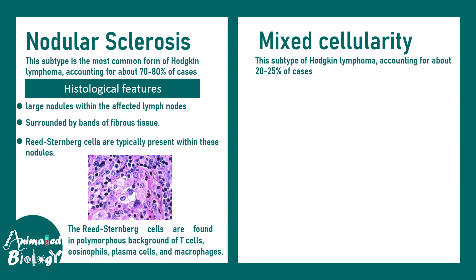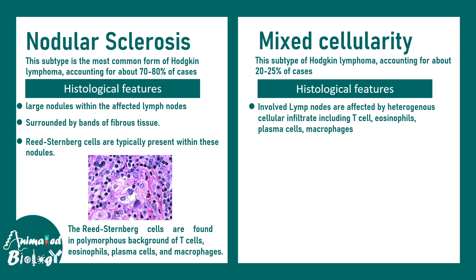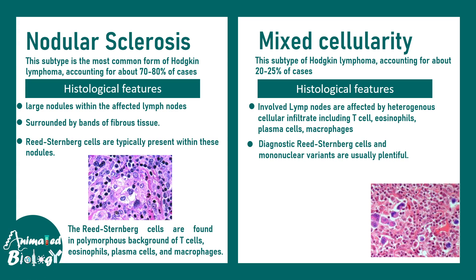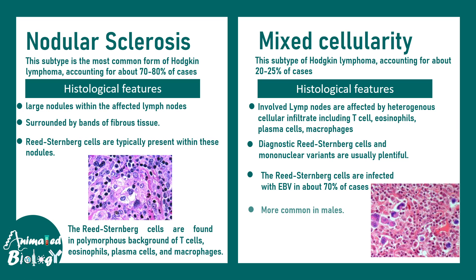Mixed cellularity is a bit rarer, constituting about 20 to 25 percent of cases. The involved lymph nodes are affected by a heterogeneous cellular infiltrate including T cells, eosinophils, plasma cells, and macrophages — all of which can interact with the Reed-Steinberg cell. It is associated with Epstein-Barr virus infection, with 70 percent of cases linked to EBV. It is more common in males compared to nodular sclerosis, which can affect both sexes.